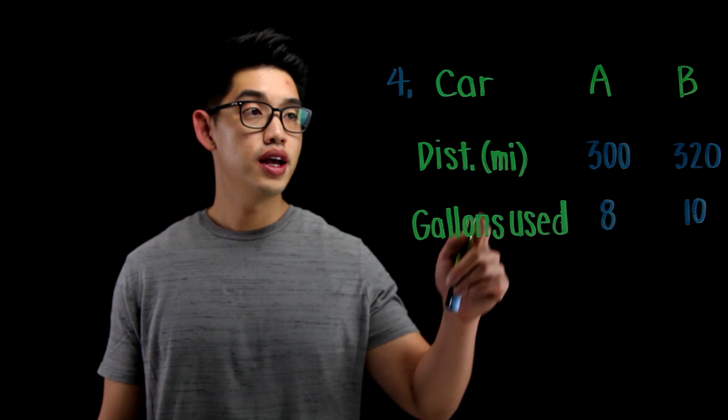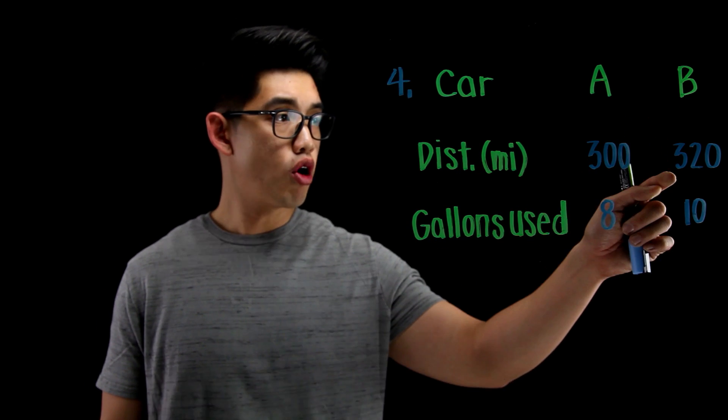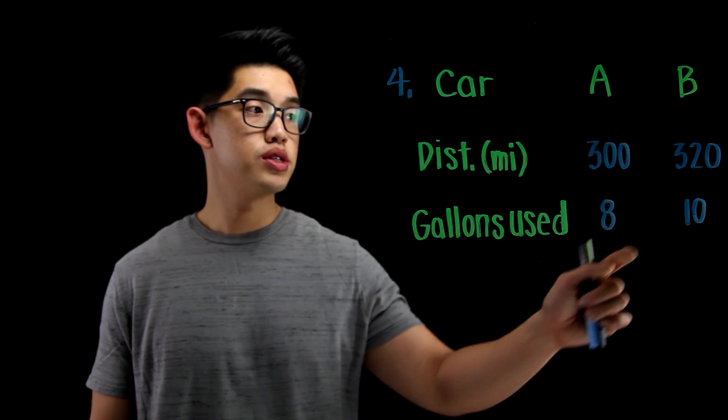For number 4, it shows two cars again. For car A, it can drive 300 miles using 8 gallons. And for car B, it can drive 320 miles using 10 gallons.